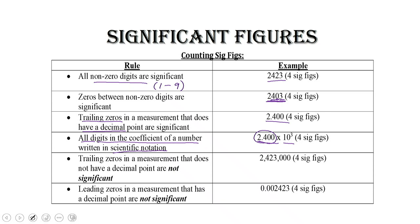Trailing zeros are the zeros on the right side of a number. Trailing zeros in a measurement that does not have a decimal point are not significant. Notice the number 2,423,000 — these zeros are just holding a place and have no value; they're insignificant. So this number has four sig figs. Notice that all of these examples have four sig figs, but in different ways. The bottom rule is that leading zeros in a measurement that has a decimal place are not significant — these are just holding spaces, leading off the number, and are not significant. That number also has four sig figs.